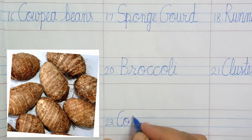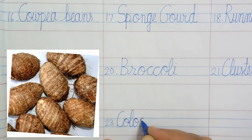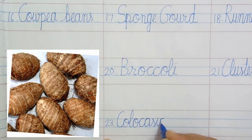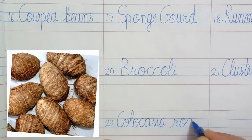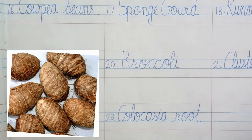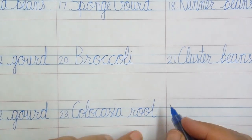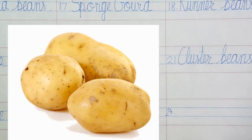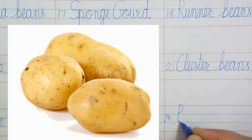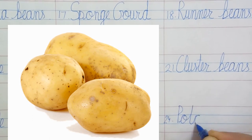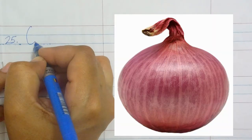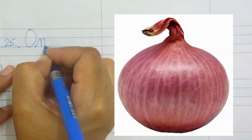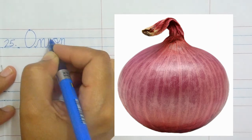Colocasia root: C-O-L-O-C-A-S-I-A R-double O-T, colocasia root. Potato: P-O-T-A-T-O, potato. Onion: O-N-I-O-N, onion.